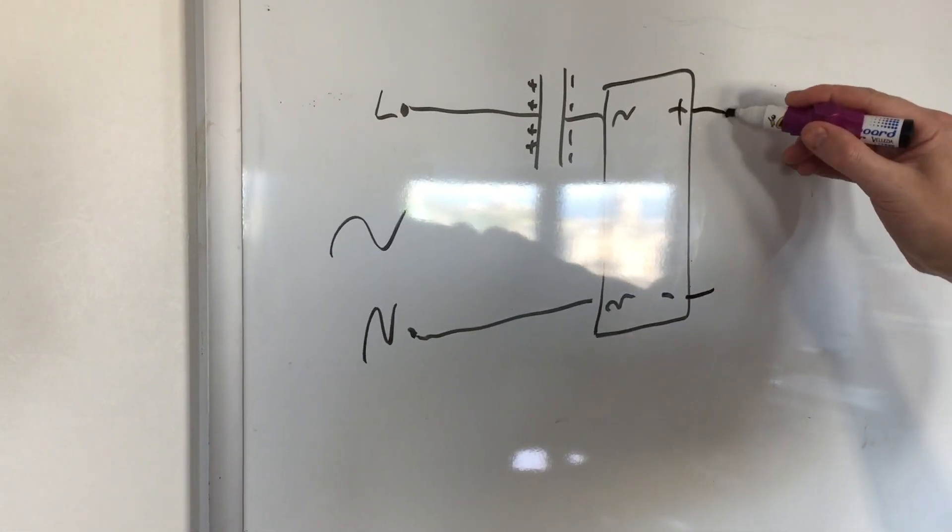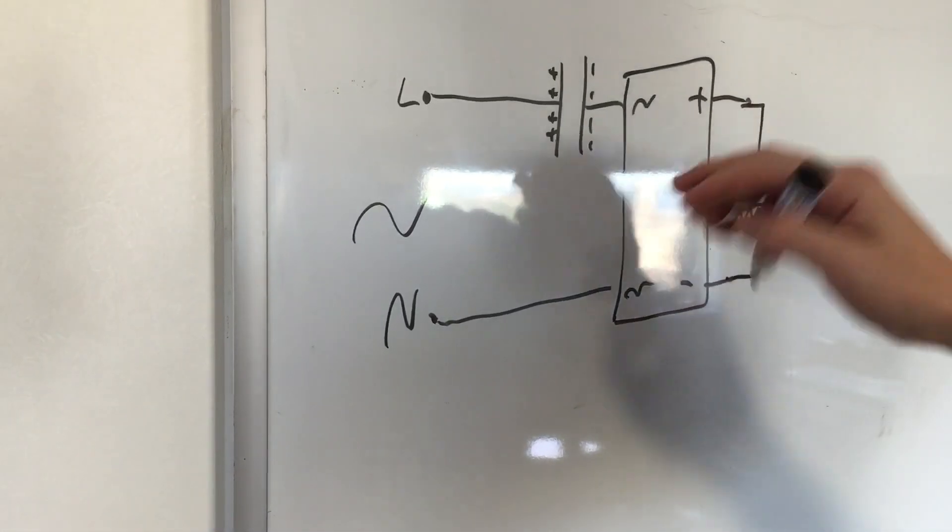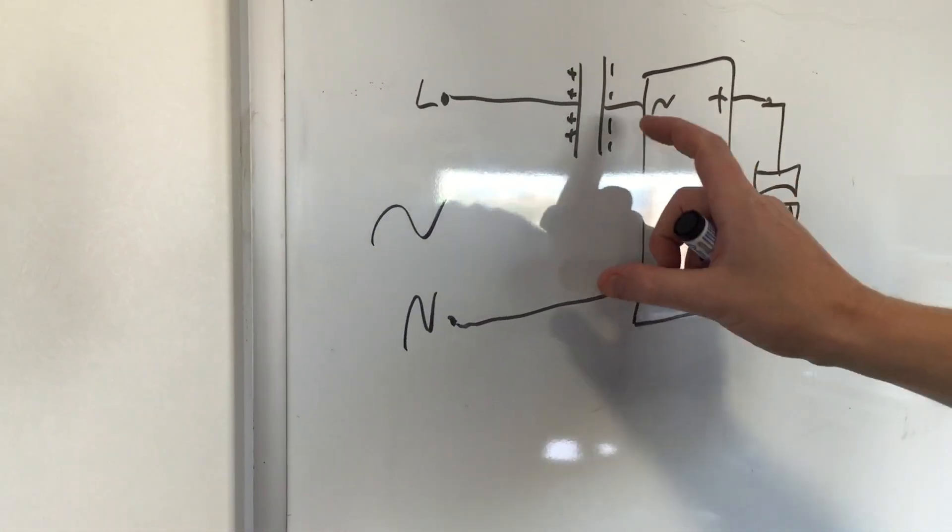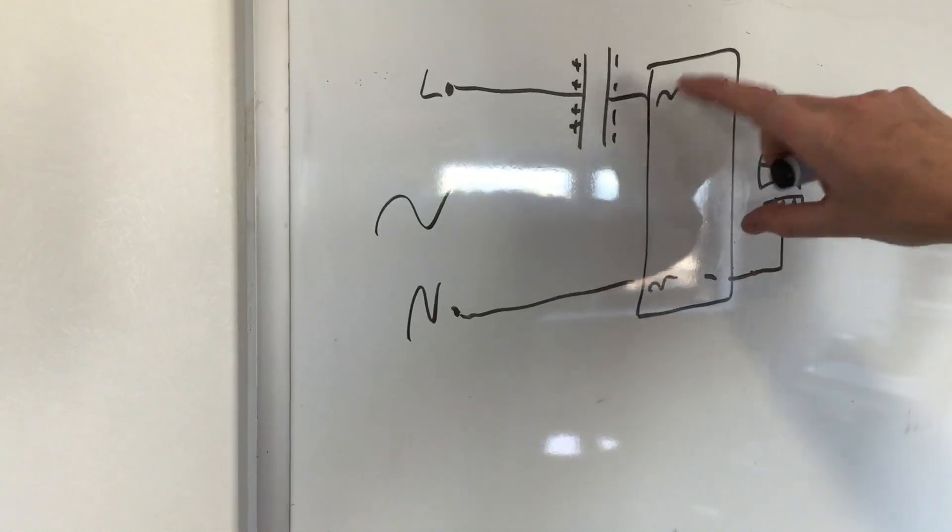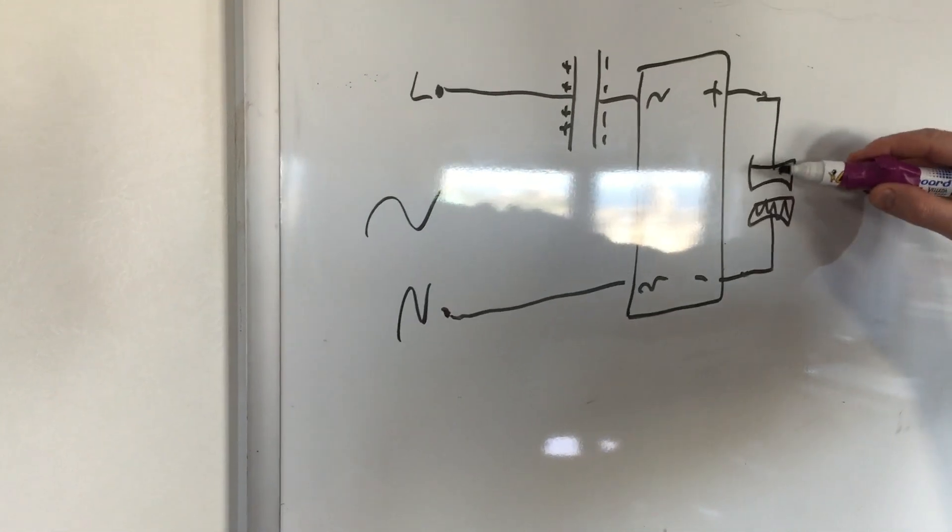Then, say you put a capacitor across the output, or the LEDs. As each half cycle of the mains occurs, that small current - the small pulse of current that is allowed through in each half wave - will basically top this capacitor up.